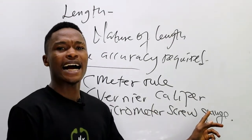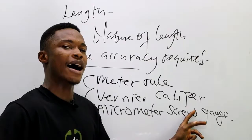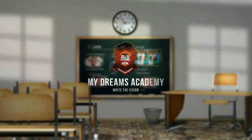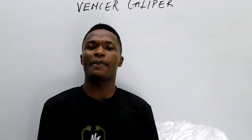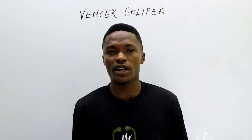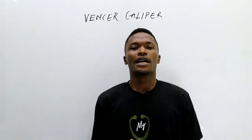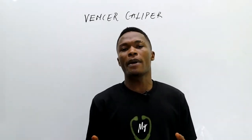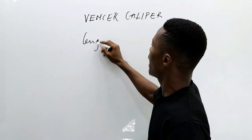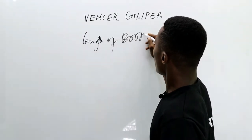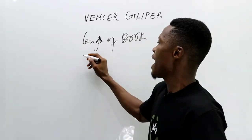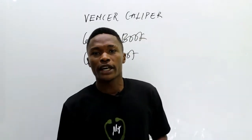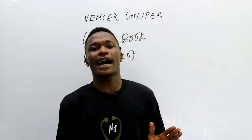In this section I'm going to talk about the vernier caliper. The vernier caliper is a precision instrument for measuring lengths. The kind of length you can use the vernier caliper to measure is similar to what you can use the meter rule to measure — for example, the length of a book or the length of a desk.